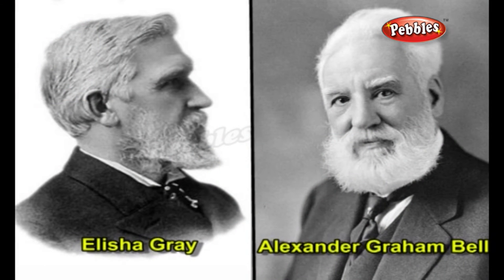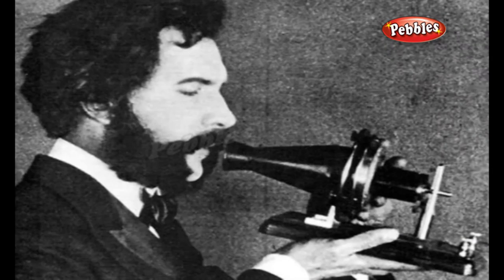In the 1870s, two inventors, Elisha Gray and Alexander Graham Bell, both independently designed devices that could transmit speech electrically. Both men rushed their respective designs to the patent office within hours of each other. Alexander Graham Bell patented his telephone first.